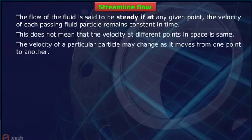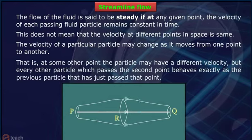The velocity of a particular particle may change as it moves from one point to another. That is, at some other point the particle may have a different velocity. But every other particle which passes the second point behaves exactly as the previous particle that has just passed that point.